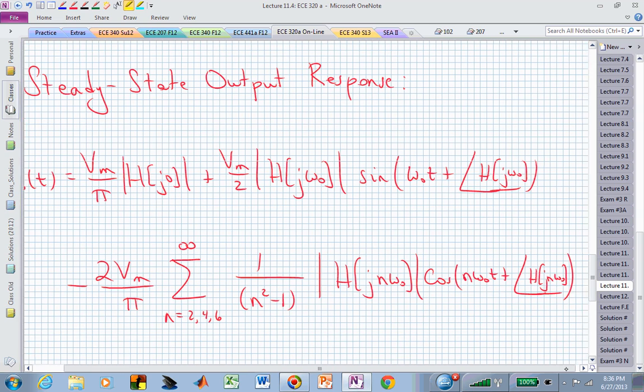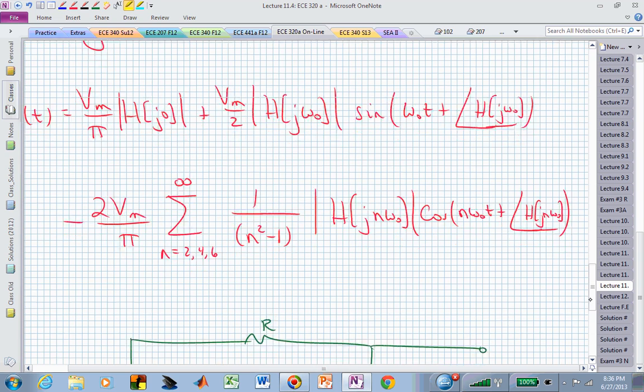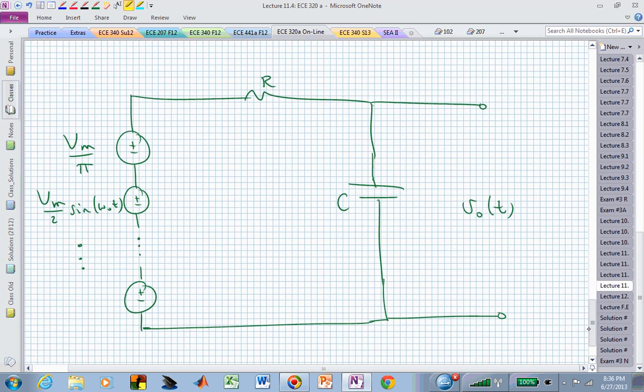And finally, we can then add in all of these other pieces, or harmonic components, based on how the transfer function is behaving at these higher harmonics, which in this case, for a half-wave rectified sine wave, those will only be even harmonic components, and we can then just isolate on those particular magnitudes and angles of our transfer function, and plug those in in the appropriate manner.